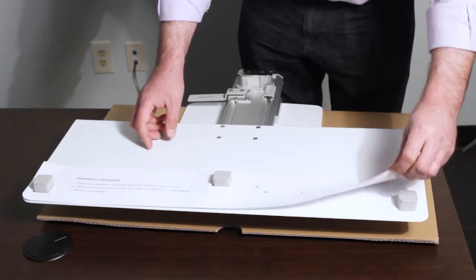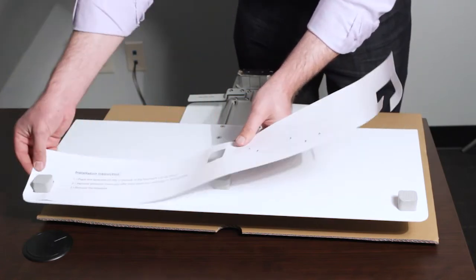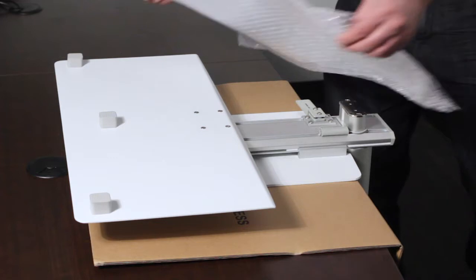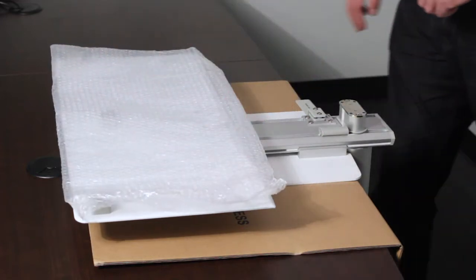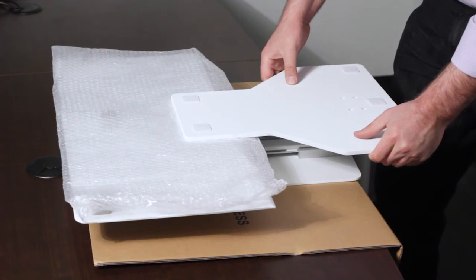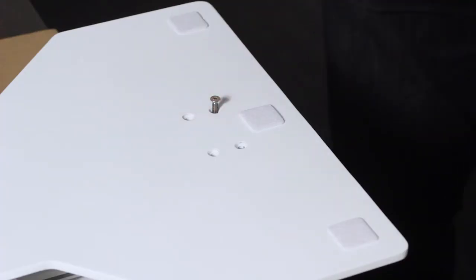Step 8. Place some of the bubble wrap on top of the keyboard tray to protect the surfaces and then attach the base plate to the vertical column using the M5 x 25 mm screws.